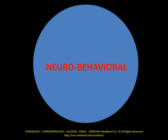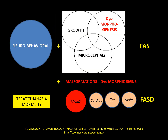Remember, neurobehavioral alterations is the number one area that is disturbed by prenatal impacts of alcohol. And there is more. There are three elements, or three subsets: one is growth, the other one is unusual appearance or morphogenesis, and a smaller head — that is microcephaly.